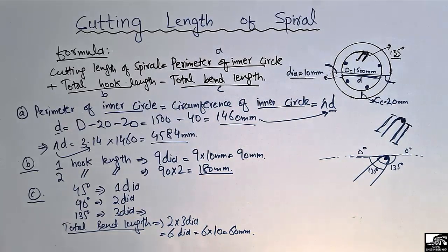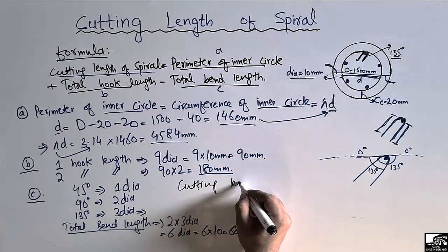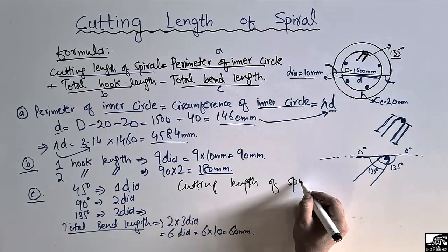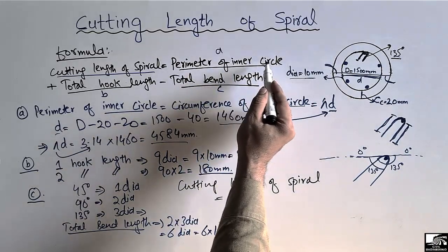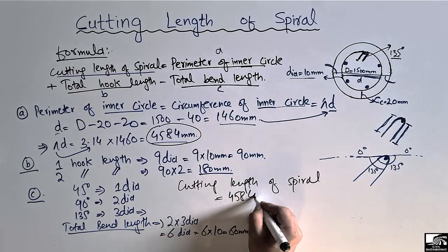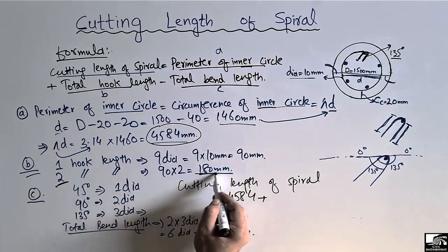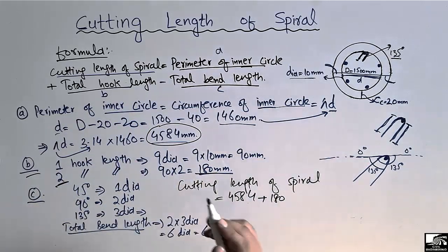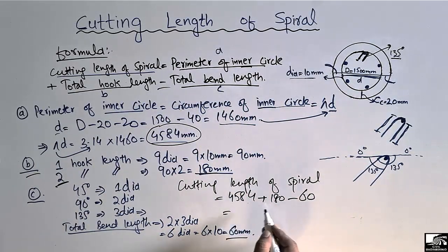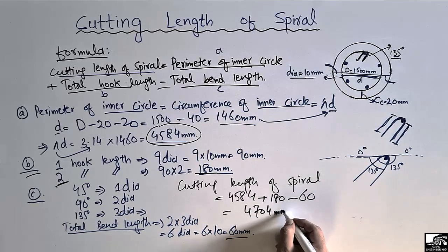Now we put all values into the formula. Cutting length of spiral = perimeter of inner circle + total hook length − total bend length = 4584 + 180 − 60 = 4704 millimeters, or 4.704 meters.